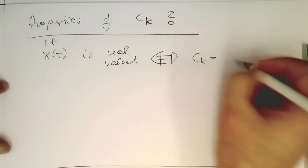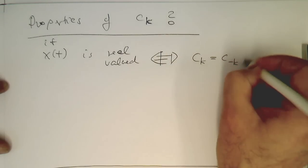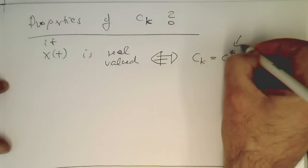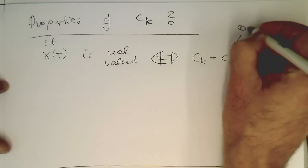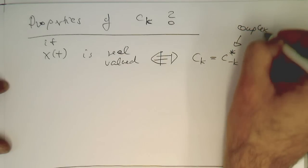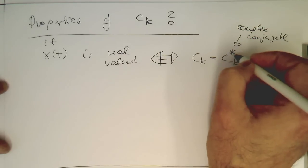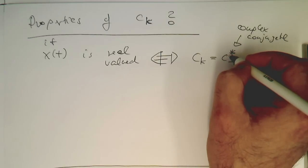ck equals c minus k star. And star means here the complex conjugate. Complex conjugate just means inverting the imaginary part.